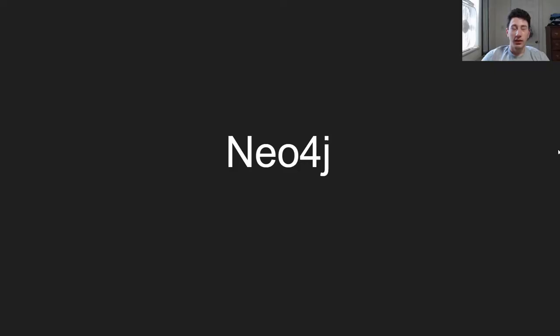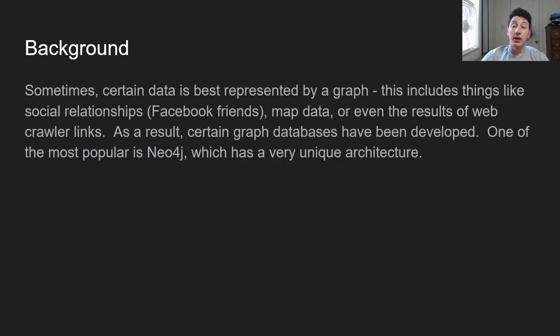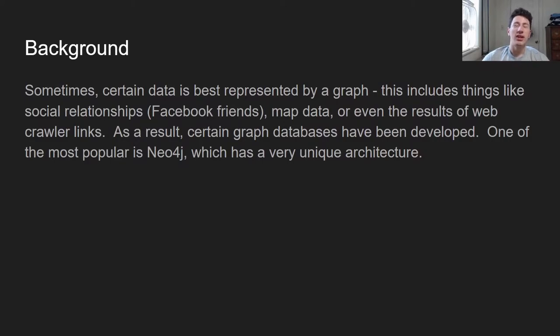Without further ado, let's talk about some graph databases. Neo4j — what is it? Basically, a ton of data these days is best represented in a graphical format. That might be something like Facebook friend relationships, map data on Google Maps, or even something like the PageRank algorithm and web crawler links.